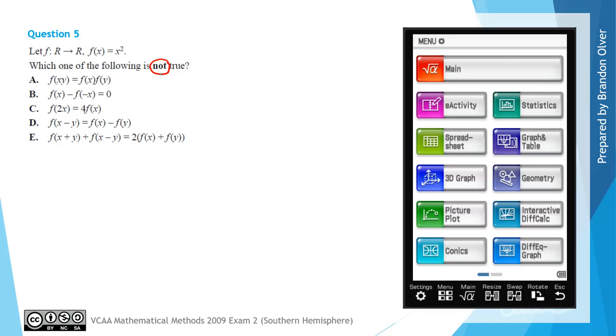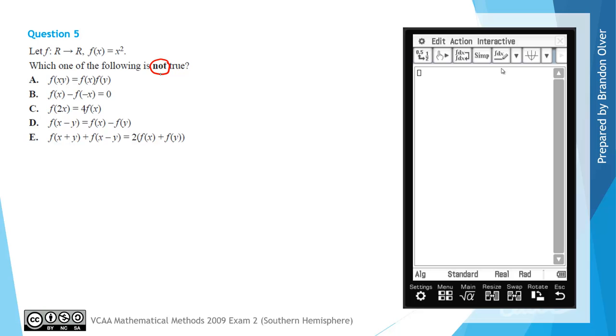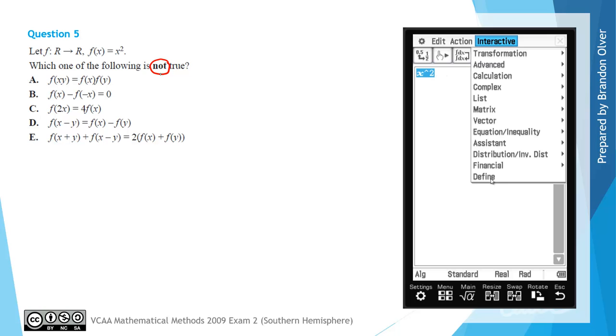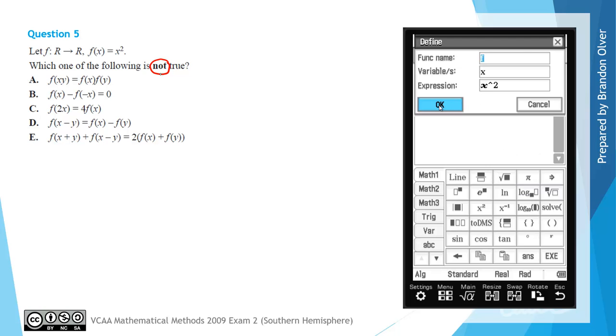On the CAS calculator go into the main menu. Next we want to define the function f of x, so we're going to type in x to the power of 2, and then we're going to highlight that and go interactive define as f of x, and we can hit OK.